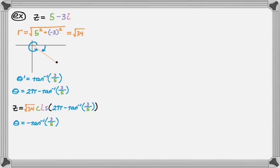And those are coterminal, right? Two pi minus arc tan of three fifths and then negative arc tan of three fifths. Any coterminal angle will actually work here, which is kind of a big deal. So if we write this.